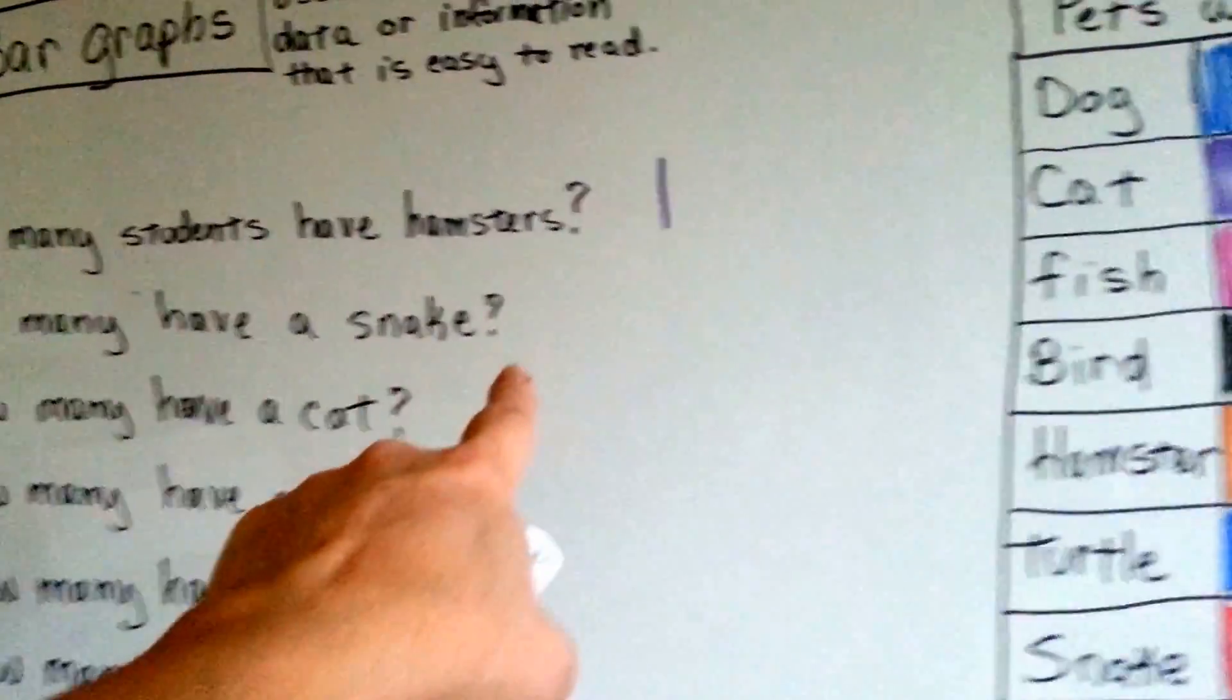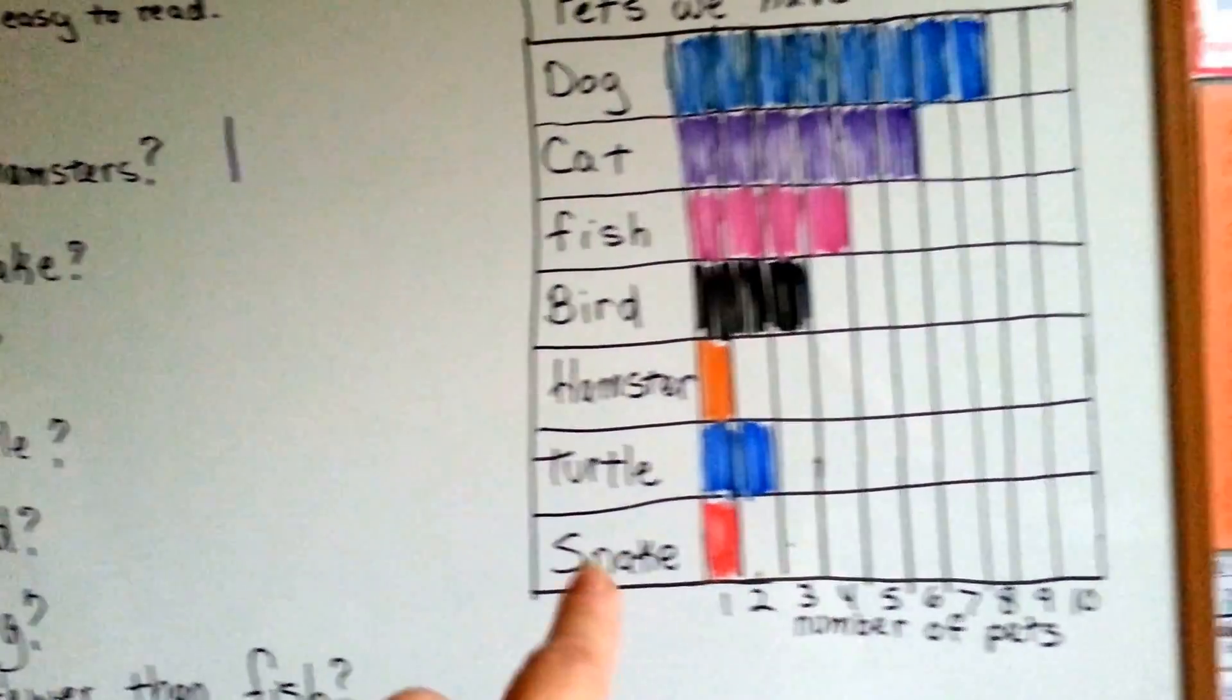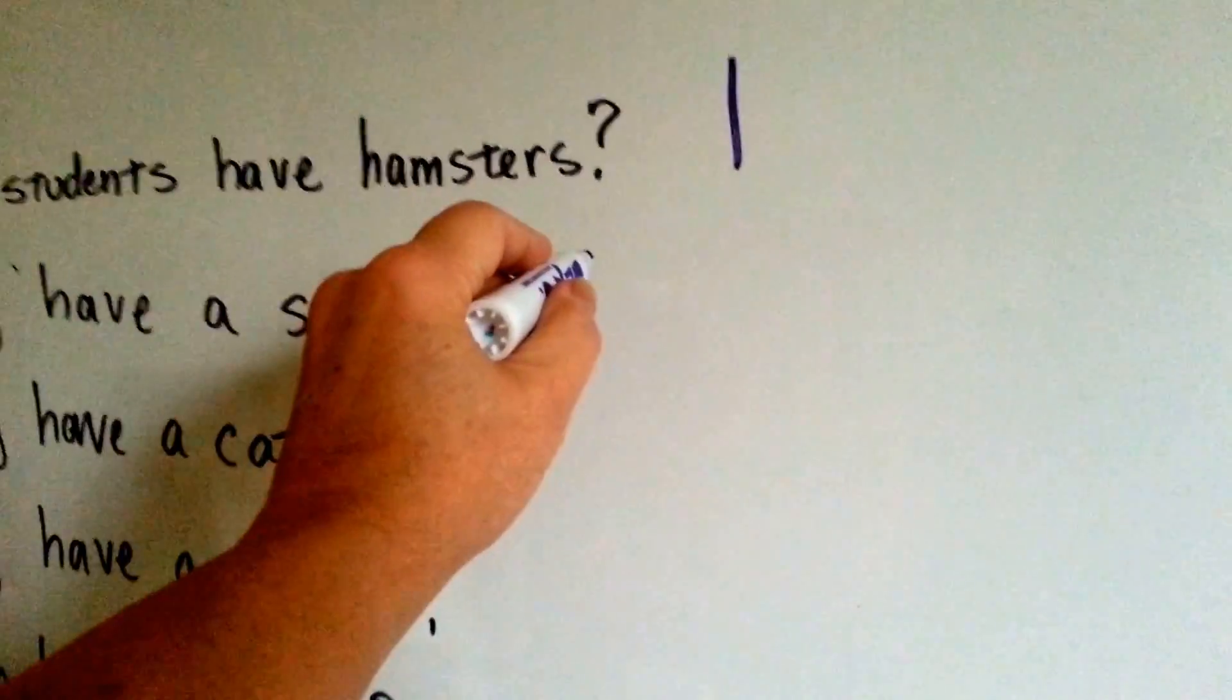How many have a snake? A snake for a pet. One student has a snake for a pet. Just like the hamster.